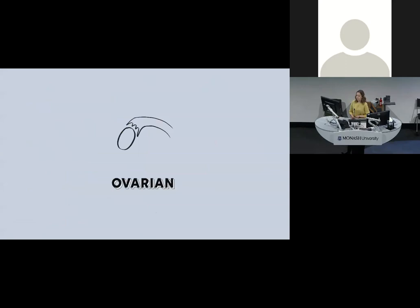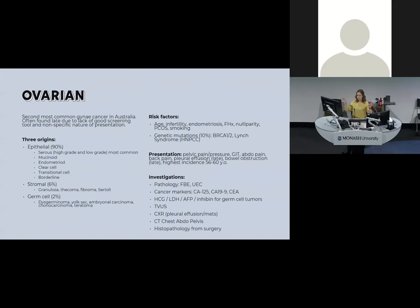Ovarian cancer is the second most common gynaecological cancer in Australia but has a really high mortality because there are no good screening tools and it's often discovered late. People usually have vague, nondescript symptoms — a little bloating or abdominal discomfort — and it's often found when very advanced. There are three origins: epithelial (by far the most common, with several subtypes), stromal tumours, and germ cell tumours.